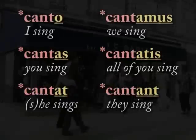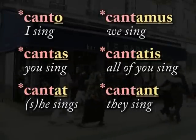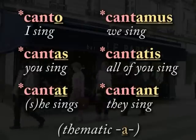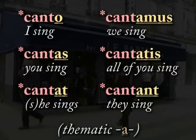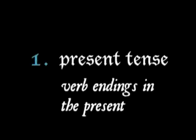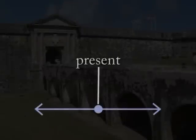Last time we saw how Romance verbs use different endings to point out the person performing the action. They also have one of four thematic vowels inside the ending, depending on the verb's conjugation. Up to now, we've only taken one slice of time: the present.